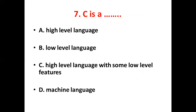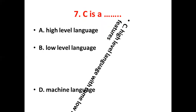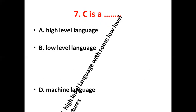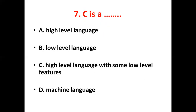Seventh bit. C is dash. Option A: High level language. Option B: Low level language. Option C: High level language with some low level features. Option D: Machine language. Answer: Option C, high level language with some low level features.